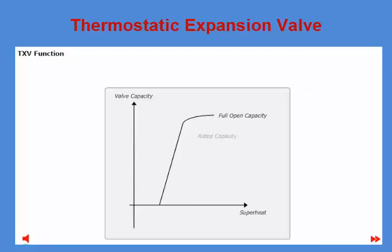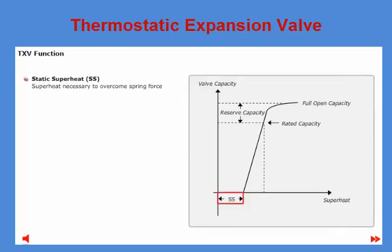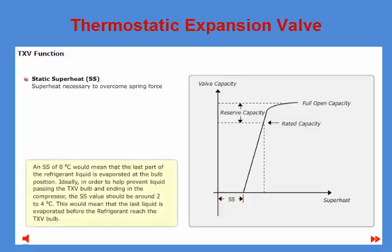Superheat in relation to the TXV function is a combination of two values or parts. The first part is called static superheat, or SS — the number of degrees of superheat needed for the valve to overcome the closing force from the TXV mainspring. SS is measured at the TXV bulb position. An SS of 0 degrees would mean that the last part of the refrigerant liquid is evaporated at the bulb position. Ideally, to help prevent liquid passing the TXV bulb and entering the compressor, the SS value should be around 2 to 4 degrees.